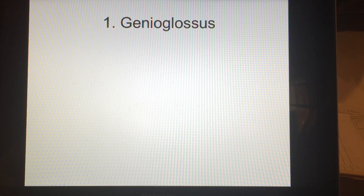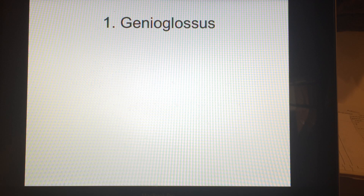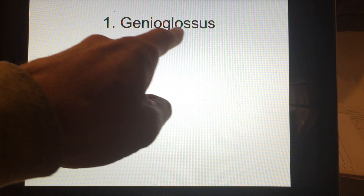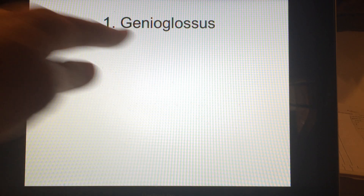Let's take a look at the first one. It is called the genioglossus, and all of these muscles are named for origin and insertion. The origin is always first in the name; the insertion is always second because there can only be one. Glossus is the Latin word from Greek for tongue — that's the insertion point. And genio is a reference to the inside of the mandible.